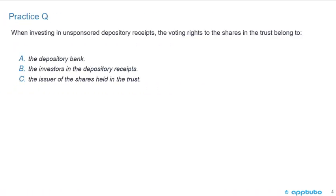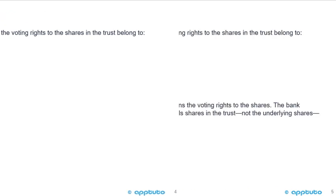Quick practice question: when investing in unsponsored depository receipts, the voting rights to the shares in the trust belong to: A, the depository bank; B, the investors in the depository receipts; or C, the issuer of the shares held in the trust.